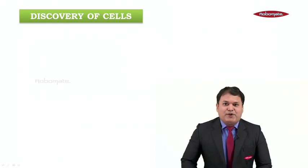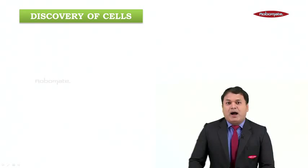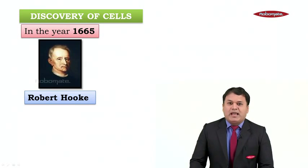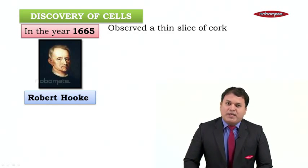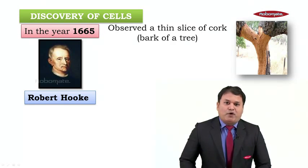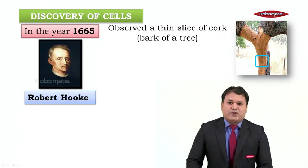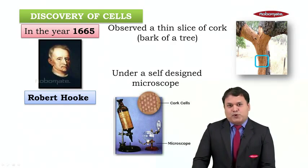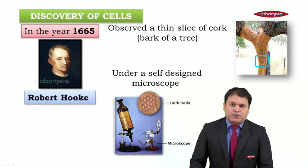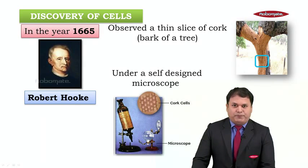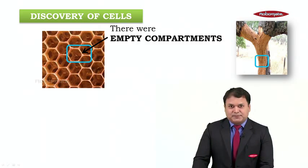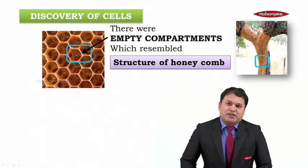Now let us go on to understand the discovery of cells — a very interesting concept. How were cells discovered? Students, in the year 1665, there was a scientist called Robert Hooke. What he did was he observed a very thin slice of cork. Cork means the bark of a tree, the outer layer of a tree. He observed the thin slice of cork under a self-designed microscope, because by that time microscopes were not invented. So he made a self-designed microscope and observed the slice of cork under it. When he observed, he saw that there were empty compartments, and these empty compartments resembled the structure of a honeycomb.